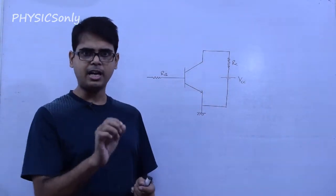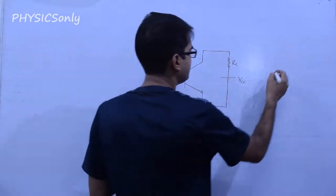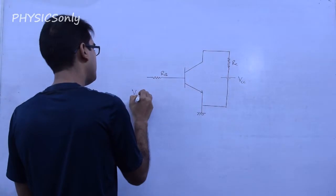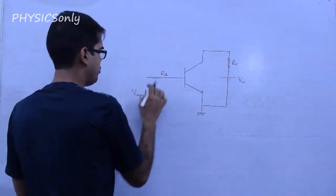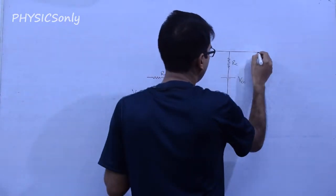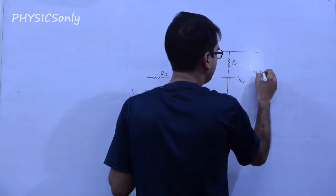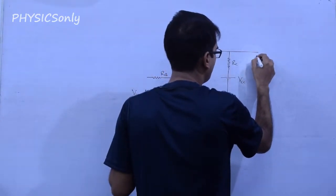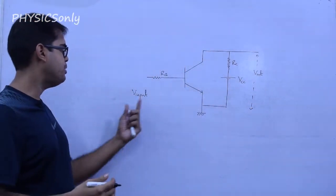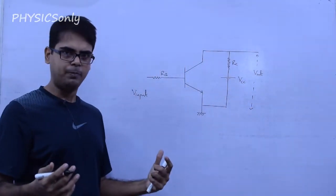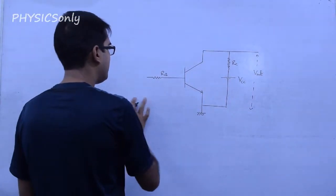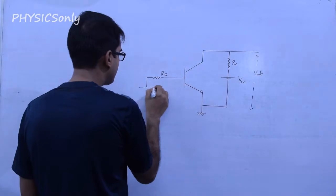What we have done is apply the input. While we see a high input, the output is low — that is the NOT gate behavior. The high input drives the normal transistor into conduction.